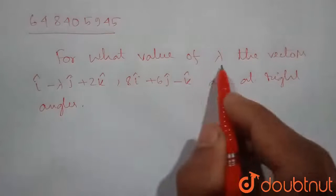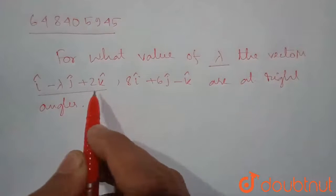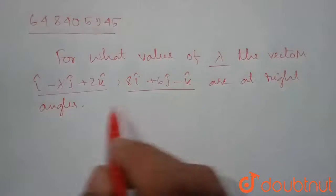Here we need to find the value of lambda for which i cap minus lambda j cap plus 2k cap and 8 i cap plus 6 j cap minus k cap are at right angles.